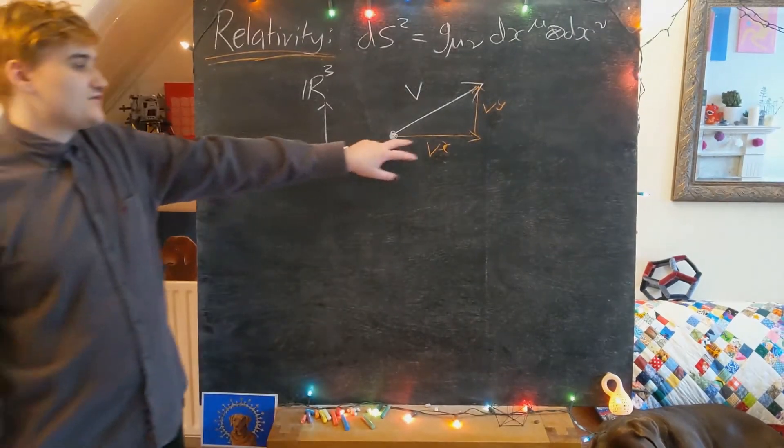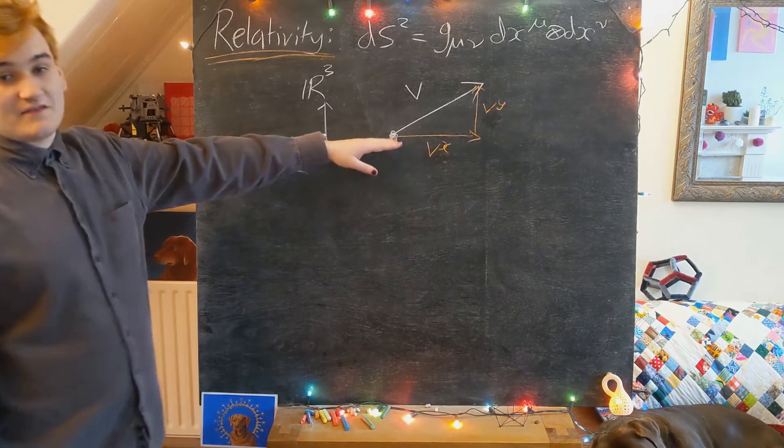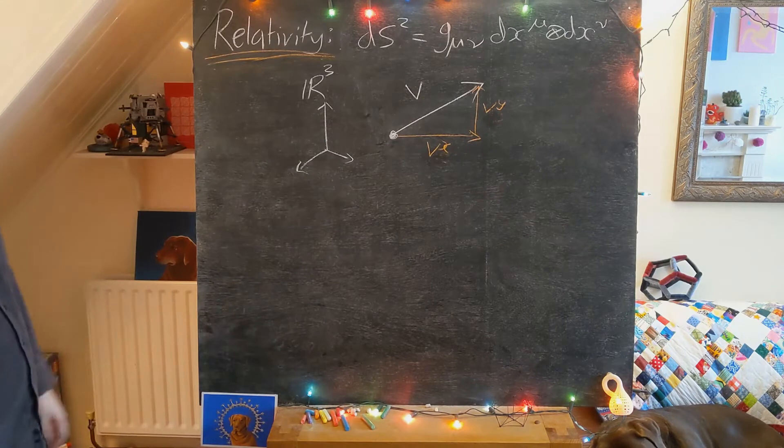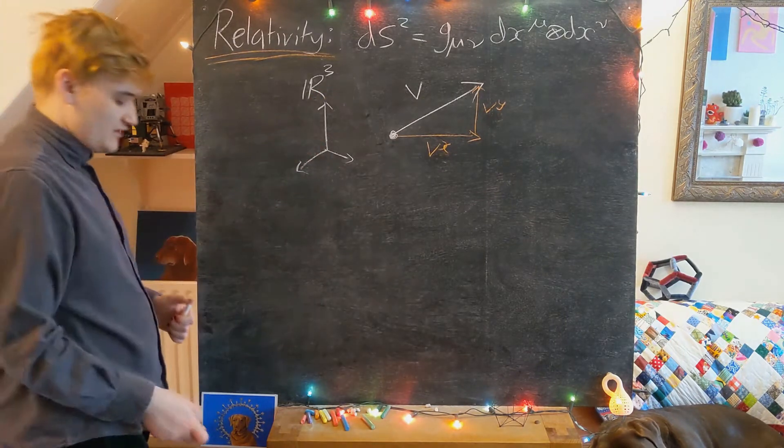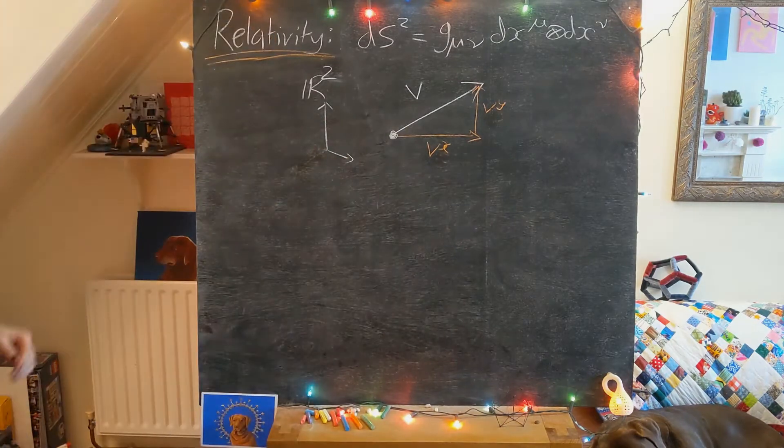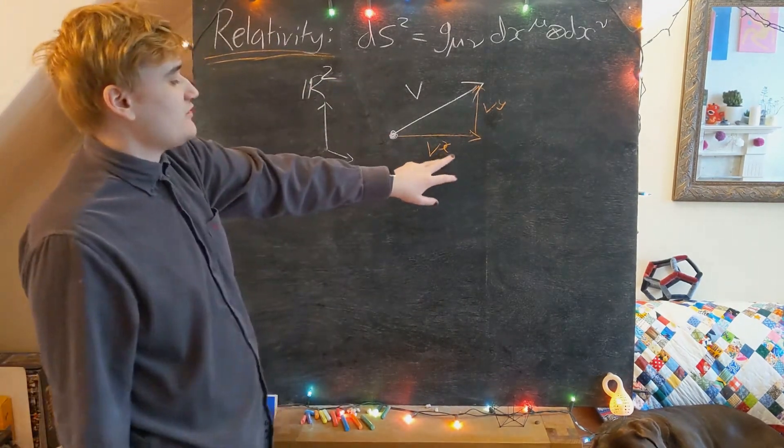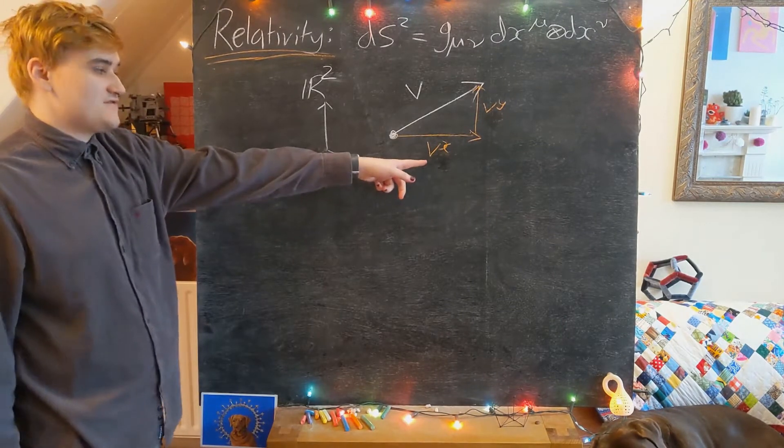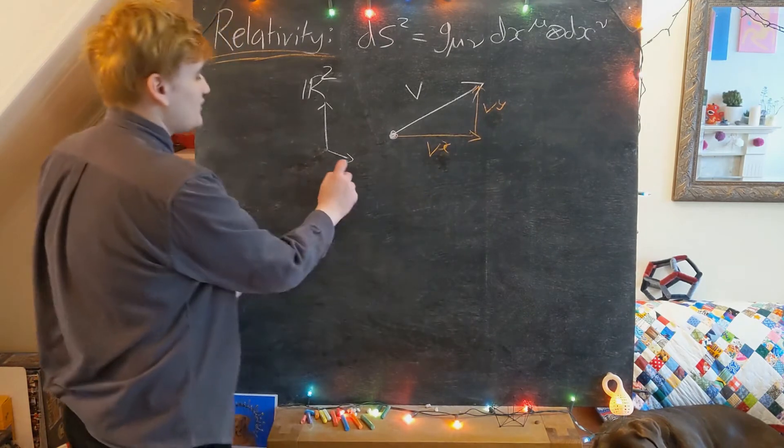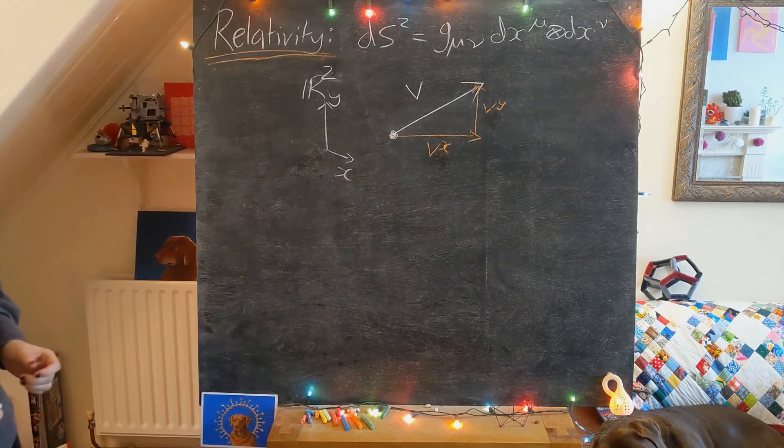So these two vector decomposition arrows represent the components of this vector V. Just for simplicity, I've drawn the vector on a two-dimensional plane. So this vector can be expressed in components - these would be components using the x-coordinate basis and the y-coordinate basis. We're labeling our coordinates as x and y.